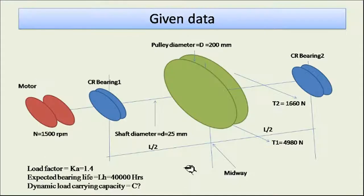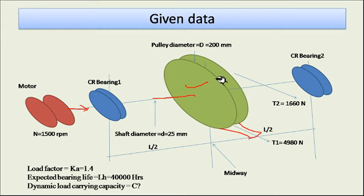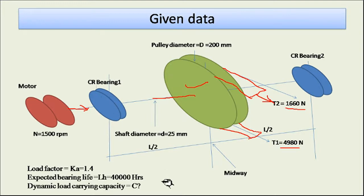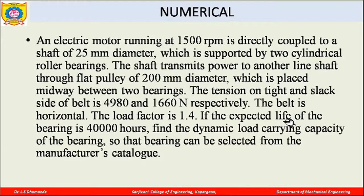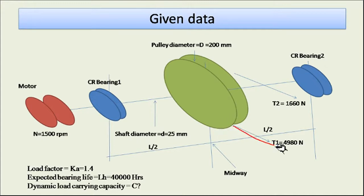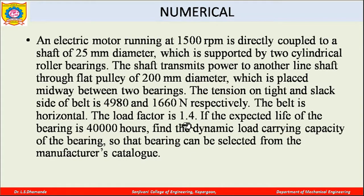This particular shaft, taking power from the motor, delivers it to another machine through a pulley mounted on the same shaft, using a belt drive. The belt is horizontal, with tension T1 on the tight side and T2 on the slack side. The load factor k is given as 1.4.